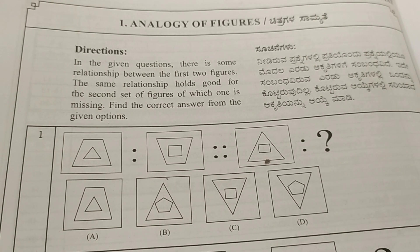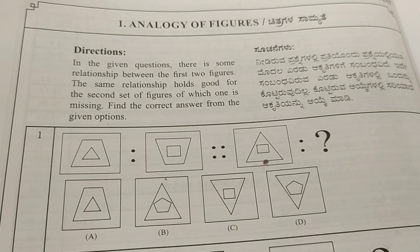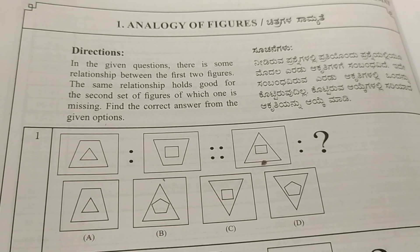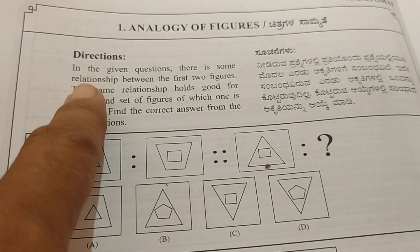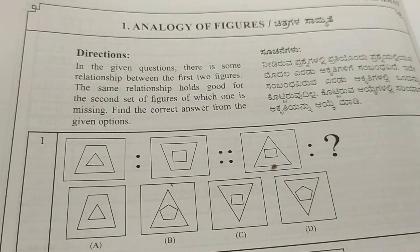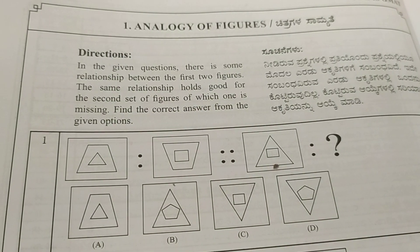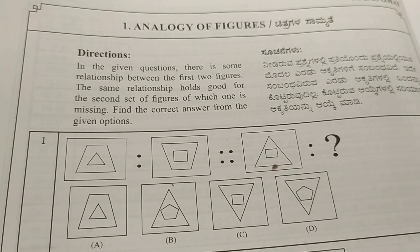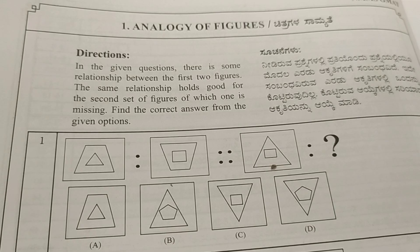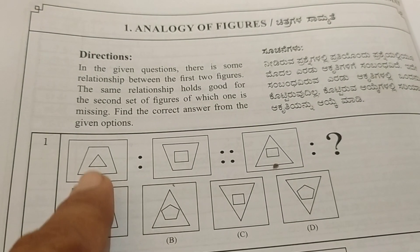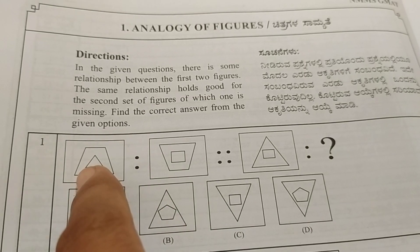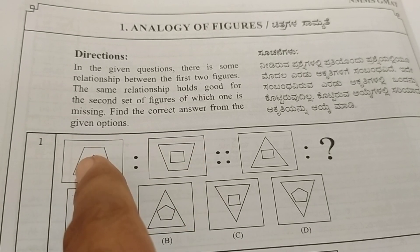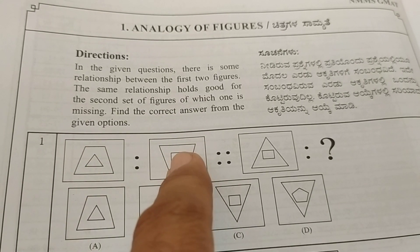So let us see — first read the direction and understand the direction clearly. The direction given here: in the given questions, there is some relationship between the first two figures. In the question figure you can see, this is the question figure, and there is a relationship between these first two figures.